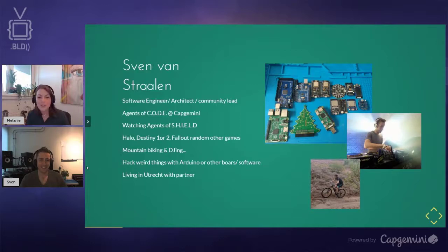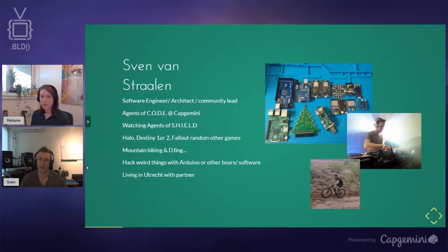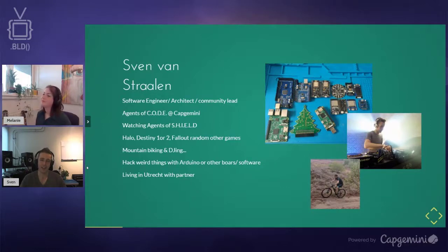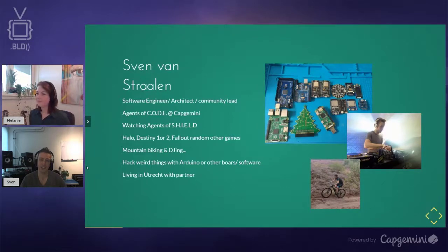My name is Sven, I'm a software engineer, architect, and community lead inside Capgemini. We recently started something called the Agents of Code at Capgemini — a group where we try out all kinds of new things and create coding events. I'm currently watching Agents of Shield, now at season five — very cool series if you're a Marvel fan. If you're on Xbox, hook me up and we can play Destiny or Fallout. I also do DJing, mountain biking, and working with Arduinos and these magical chips — it's become an addiction rather than a hobby.